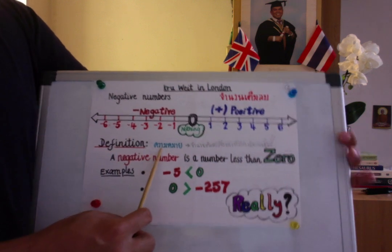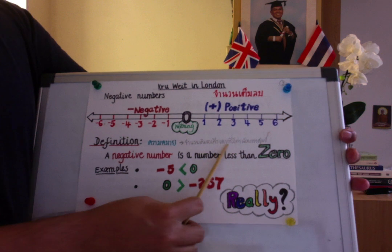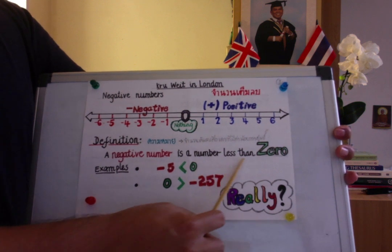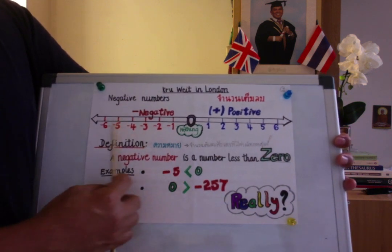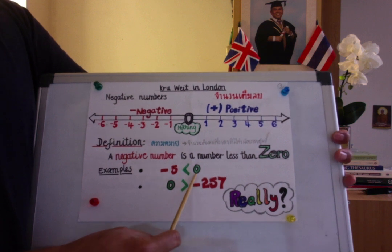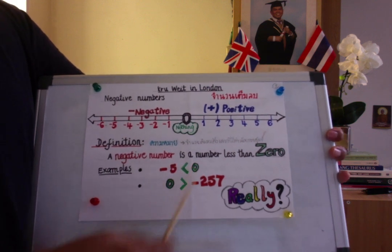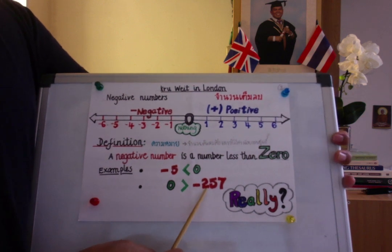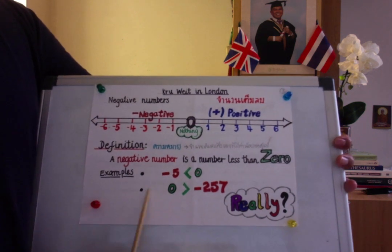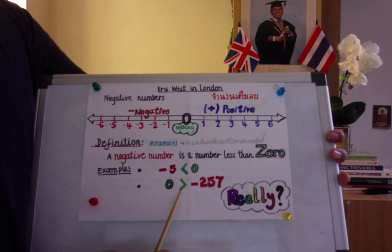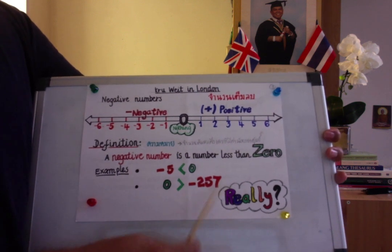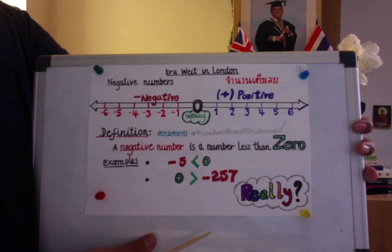What is the definition of a negative number? A negative number is a number less than zero — it has a value less than 0. For example, negative 5 is less than 0. Even if the number looks large, negative 257 is also less than 0. Or in this number sentence: 0 is greater than negative 257. Zero has a greater value than negative 257.